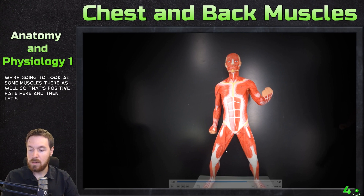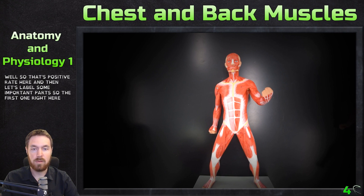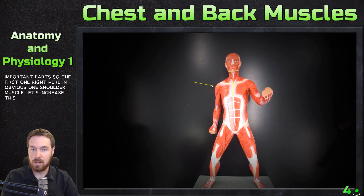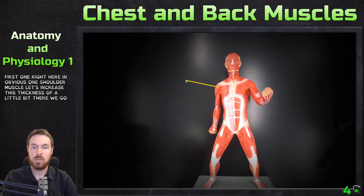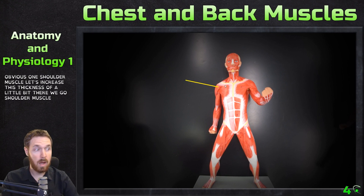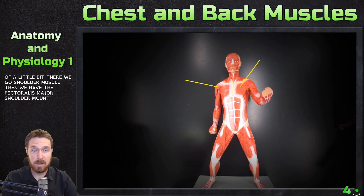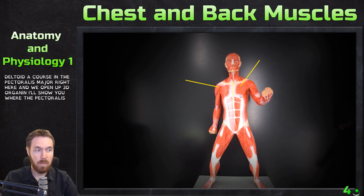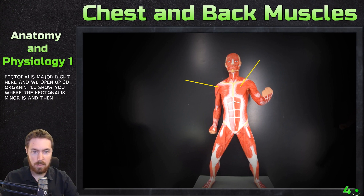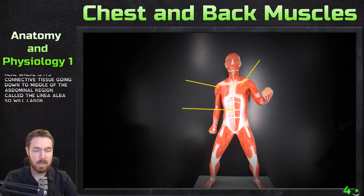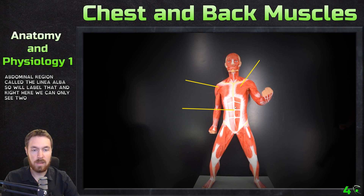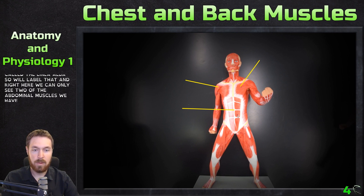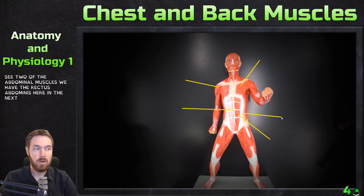Let's pause it right here and label some important parts. The first obvious one is the shoulder muscle — the deltoid — and then we have the pectoralis major. When we open up 3D Organon I'll show you where the pectoralis minor is. Right here we have this connective tissue going down the middle of the abdominal region called the linea alba.